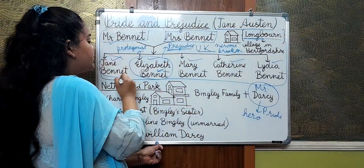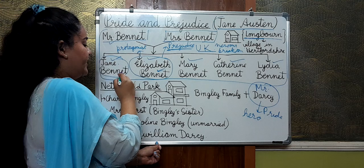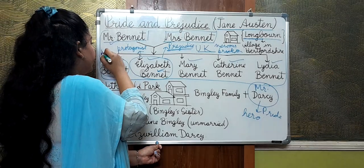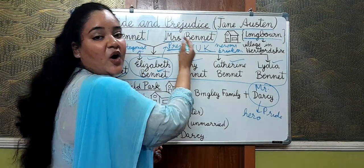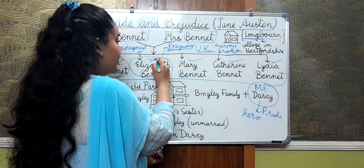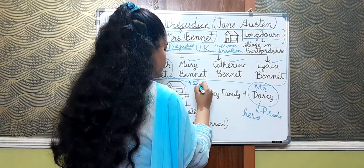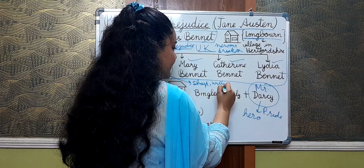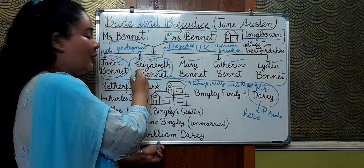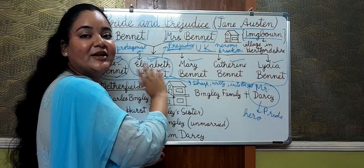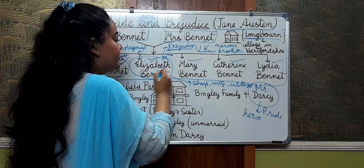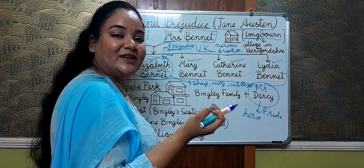Jane Bennet is the most beautiful among all the Bennet sisters. She is the eldest Bennet daughter and very pretty. Just contrary to her mother, she is very well-mannered, courteous, polite, and shy. Elizabeth Bennet, on the other hand, is very sharp, witty, and intelligent. She is beautiful as well, but only next to Jane Bennet — if we compare them on the basis of beauty, Jane comes first and then Elizabeth. Elizabeth has all the qualities required to be the heroine of the novel.